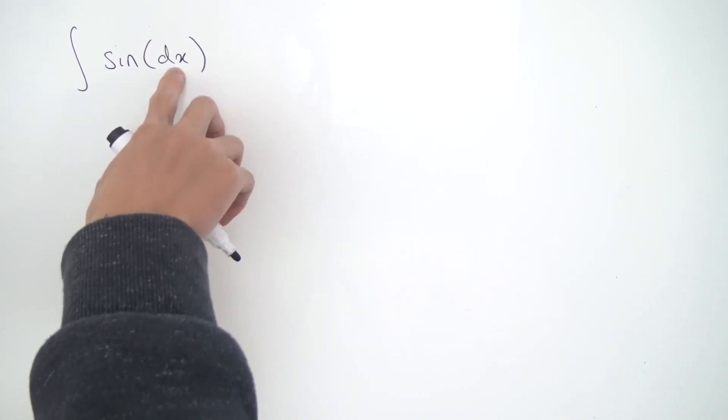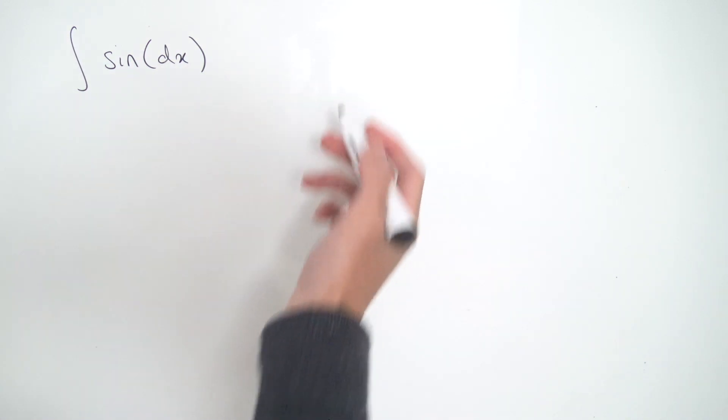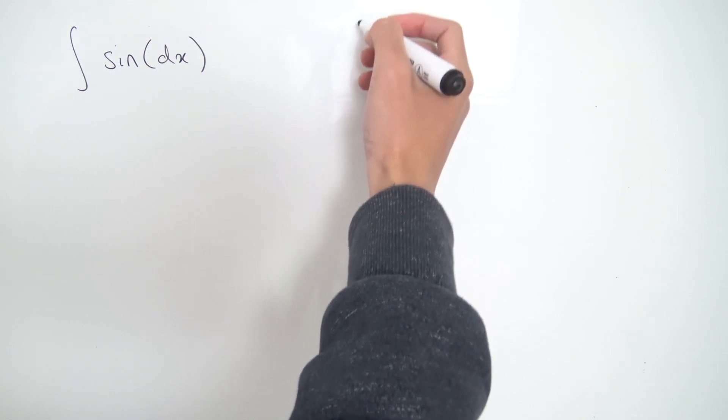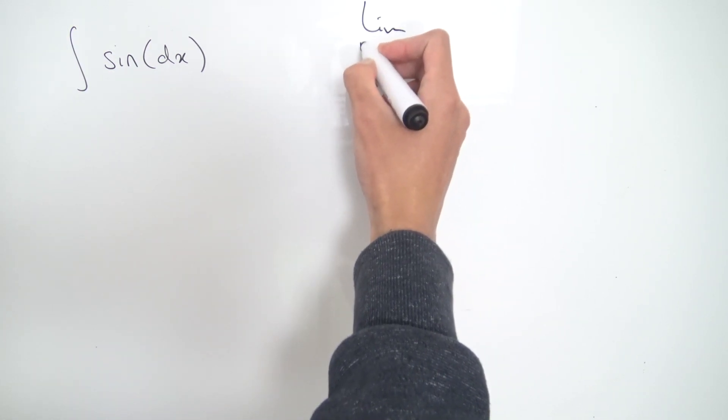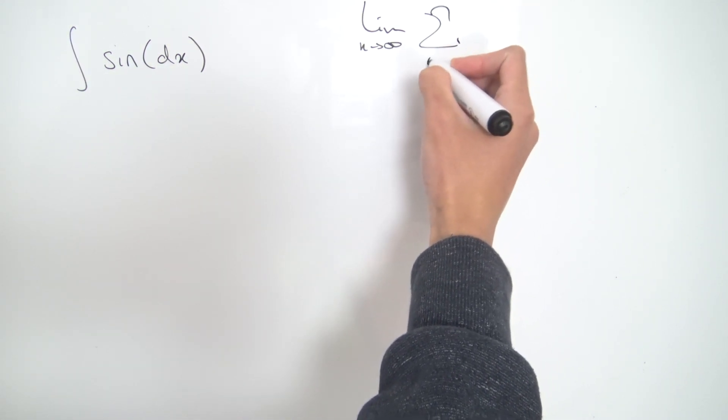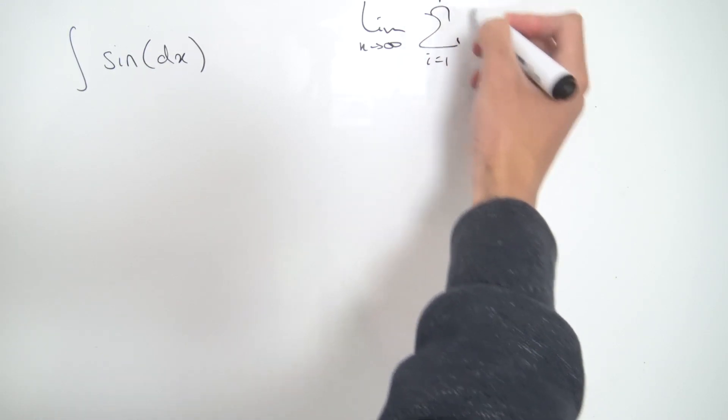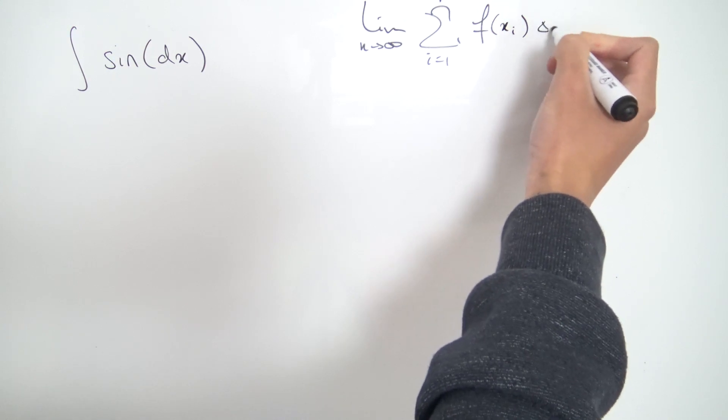First thing we need to do is understand our dx a little bit better. What exactly is dx? Well if you take a look at the Riemann sum definition of our integral, this integral is equal to the limit as n approaches infinity of these Riemann sums, sum from i equals one to n of f of xi times delta x.